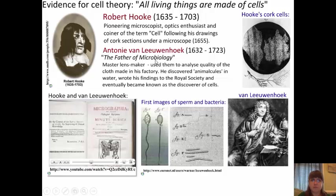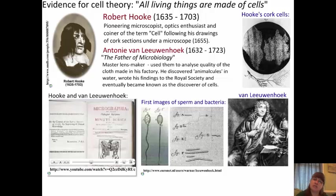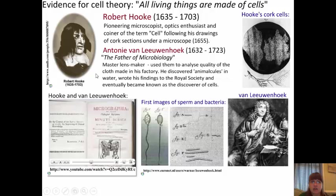Then we have Antonie Van Leeuwenhoek, who is coined the father of microbiology. He was a master lens maker, and he used the lens to analyze the quality of cloth in his factory. He discovered things he named 'animalcules' in water, wrote his findings to the Royal Society, and eventually became known as the discoverer of cells. So Leeuwenhoek is the discoverer of cells, but Robert Hooke is the namer of cells.